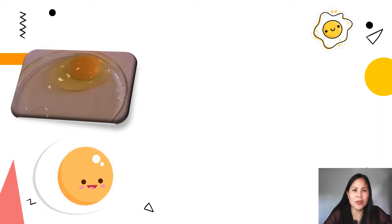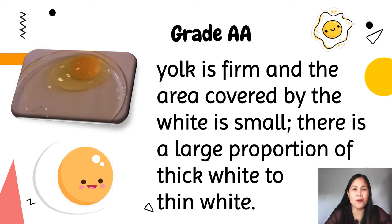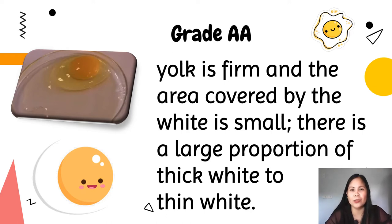For the different grades of eggs: AA grade — the yolk is firm and the area covered by the white is small. There is a large proportion of thick white to thin white. When broken, AA grade eggs have only a small amount of spread and the yolk will be in the center of the white. The white is thick and stands high, the chalaza is prominent, and the yolk is firm, round, and high. They are suitable for any type of use and definitely preferred for poaching, frying, and cooking in the shell.